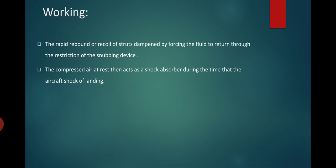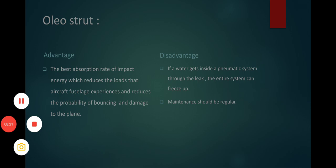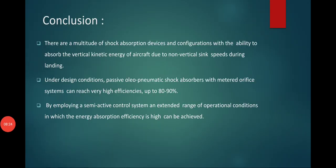Regarding advantages and disadvantages: the oleo strut has the best absorption rate of impact energy, which reduces the loads that the aircraft experiences and reduces the probability of bouncing and damage. As a disadvantage, if water gets inside the pneumatic system through a leak, the entire system can freeze up. Regular maintenance is required, and the maintenance cost of the oleo strut shock absorber is high.